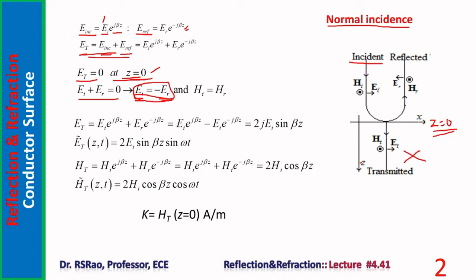We can also conclude that H_i equals H_r. The direction of the magnetic field is the direction of propagation crossed with the direction of the electric field. The direction of propagation got reversed, and the direction of electric field also got reversed — both reversed, so the direction of magnetic field undergoes no phase change. Therefore H_i equals H_r. In summary: the tangential component of E undergoes phase reversal, whereas the tangential component of H undergoes no phase reversal upon reflection from a perfect conductor.